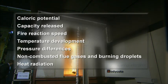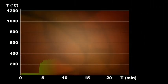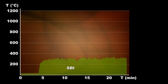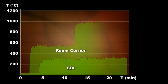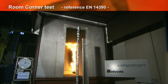The SBI only provides information about fire reaction at a low temperature load of about 300 degrees Celsius at 1.5 meters above the burner. The room corner provides information about fire reaction at higher temperature loads up to about 1000 degrees Celsius at 2.4 meters above the burner. Thus, the room corner test is a better representation of what actually happens in a fire that has developed.